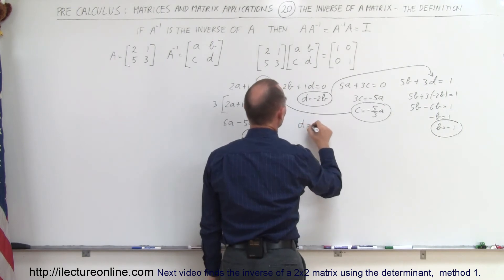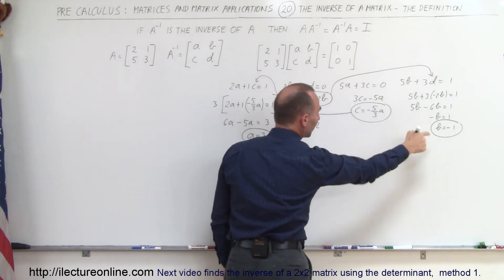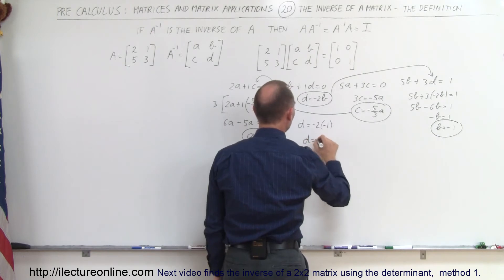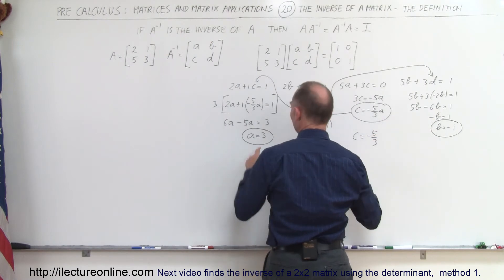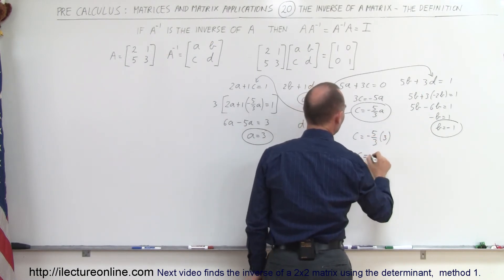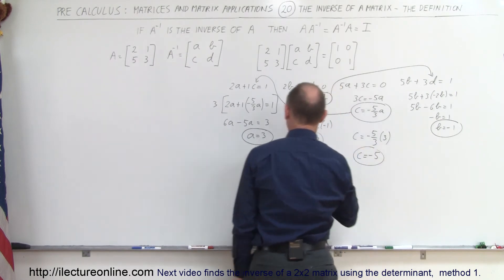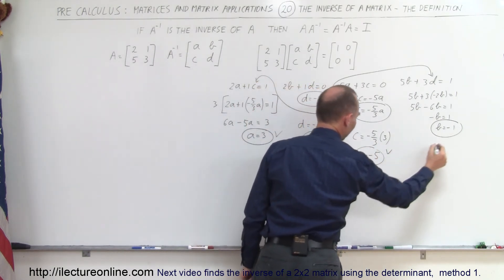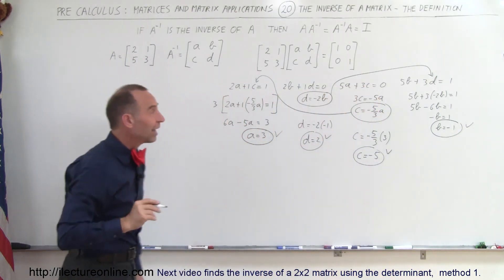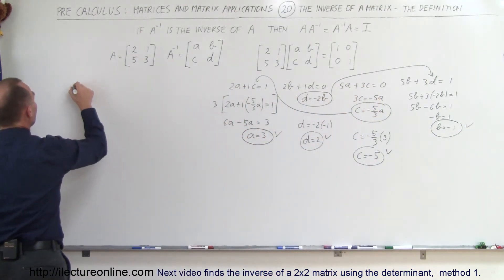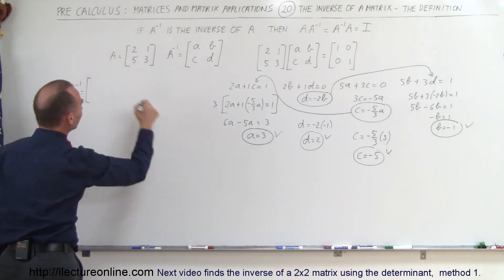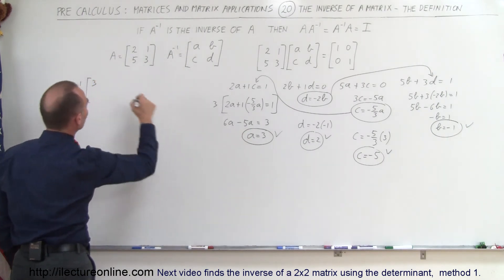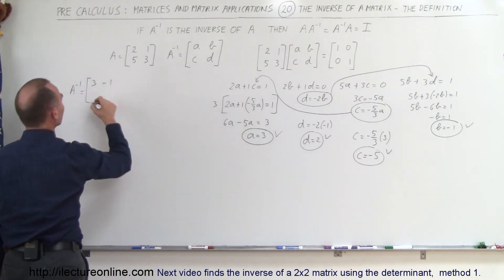We can now use those two results in the other equations. D equals minus 2 times B, and since B is negative 1, D equals 2. And C equals minus 5 over 3 times A, and since A equals 3, C equals negative 5. So A equals 3, B equals negative 1, C equals negative 5, D equals 2 — which means I now have all the elements of my inverse matrix.